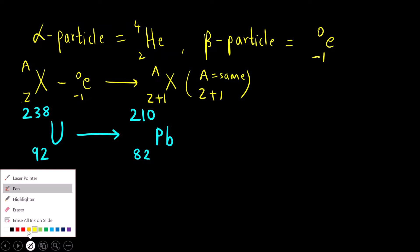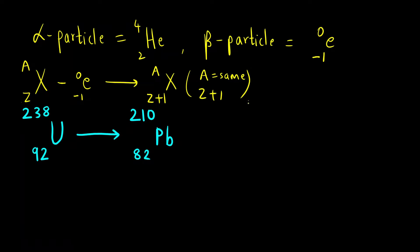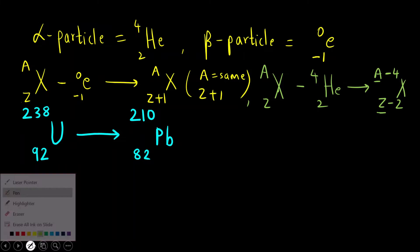Similarly, let us see what happens when we remove an alpha particle. Again, I take an element X with atomic mass A and atomic number Z minus helium nuclei, that is alpha particle with atomic number 2 and atomic mass 4. So A minus 4 and Z minus 2. What happens? The atomic mass number decreases by 4 units, atomic number decreases by 2 units.